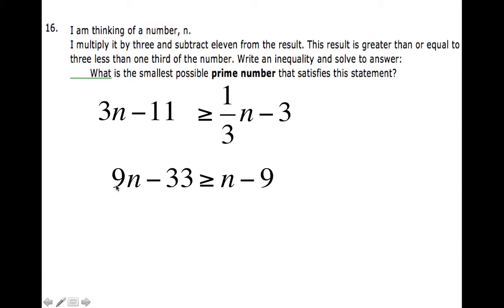Now I'm going to subtract n from both sides. So 8n is greater than or equal to 24. Divided by 8.